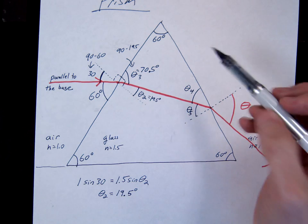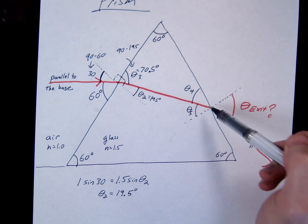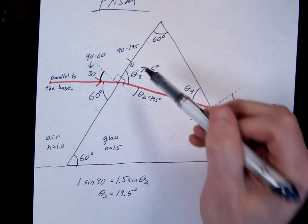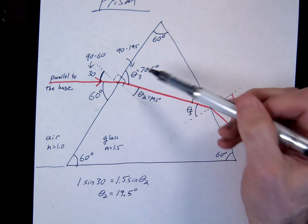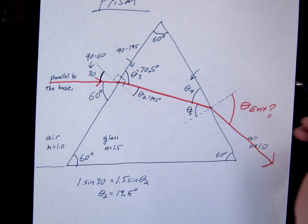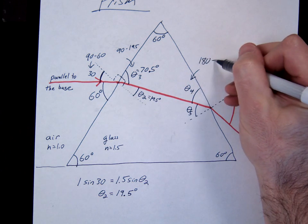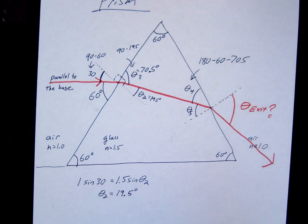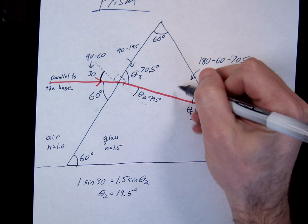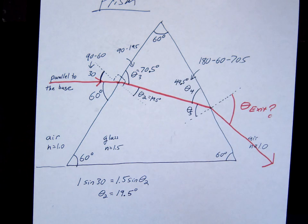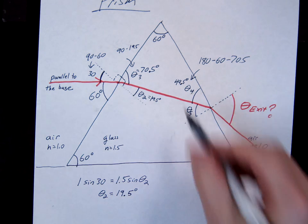Then what you're going to do is notice that this is a nice triangle. And what do we know about triangles? The three angles add up to 180. So if I know two of the angles, I should be able to get the third angle. So theta 4 should be 180 minus 60 minus 70.5. Did you say 49.5?